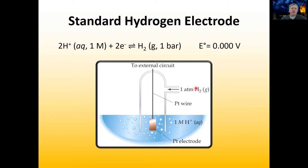If you're driving the reaction in the opposite way, then the hydrogen gas will come in here and give up electrons to the system and form protons. So whether you are forming protons or forming hydrogen gas depends on the reduction potential of the other species — the species in the other half cell.